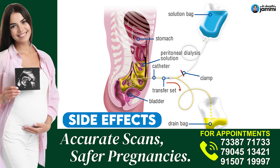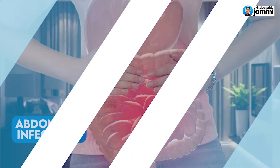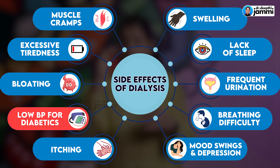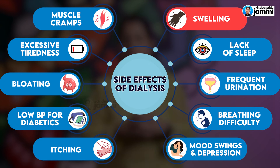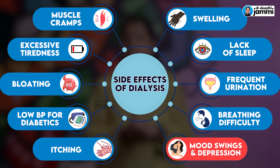As for side effects of peritoneal dialysis, because the catheter is inside the body, there is risk of abdominal infections. General dialysis side effects include: muscle cramps, excessive tiredness, bloated feeling, blood pressure fluctuations in diabetic patients, itching at the vascular channel site, swelling, infections, restless legs, sleep apnea, pain, reduced urination, and mood swings and depression.